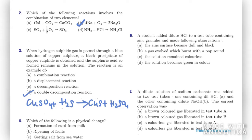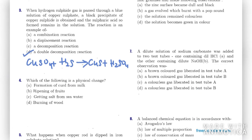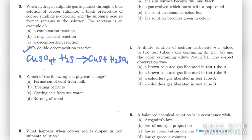Question four asks which of the following is a physical change. The options are: formation of curd from milk, ripening of fruits, getting salt from seawater, or burning of wood. The right option is C — getting salt from seawater.